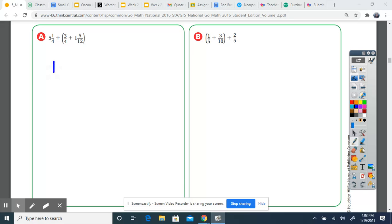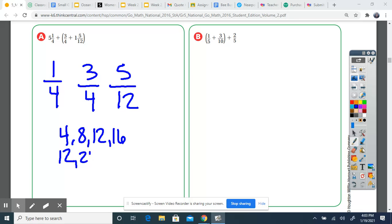So I have one fourth, three fourths, and five twelfths. Since I have two fours and one twelve, I'm going to list my multiples for four and twelve. I'm not going to list my multiples for four twice—that would be pointless. So for four: 4, 8, 12, 16... and twelve: 12, 24. My lowest number that they have in common is 12, so this is my LCD.